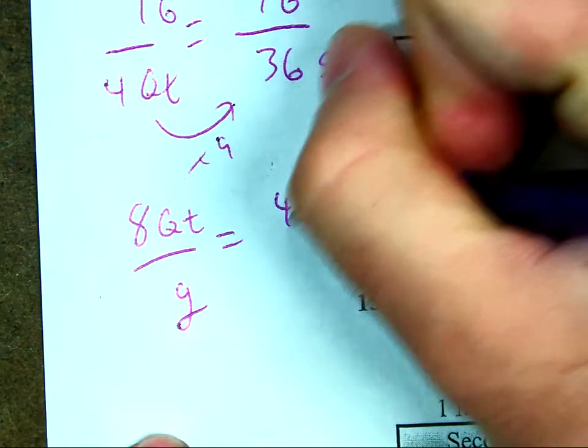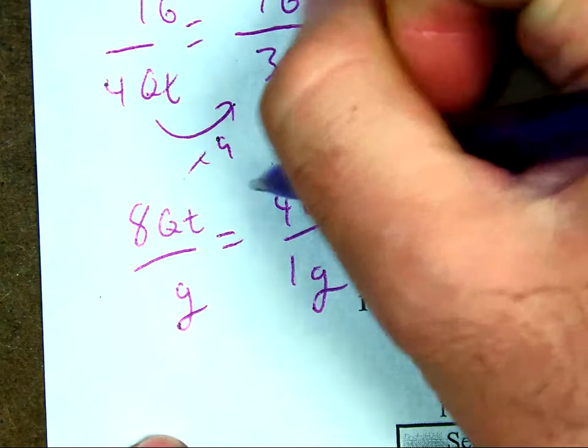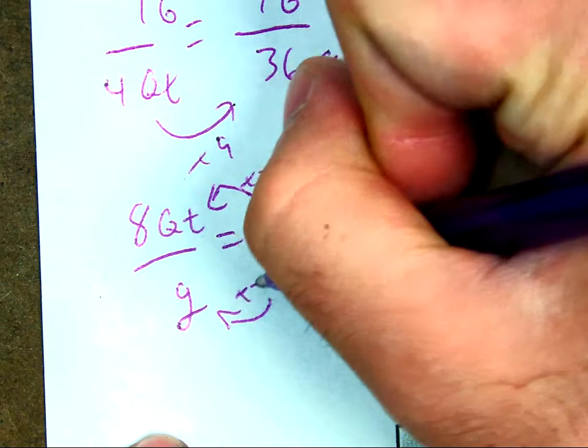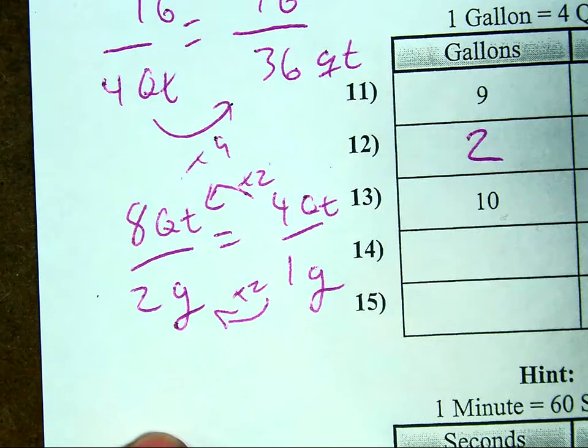I know there are 4 quarts in 1 gallon. So I do this. I multiply this times 2. So I have to do this times 2 as well because the top and the bottom have to match. 1 times 2 will be 2 gallons.